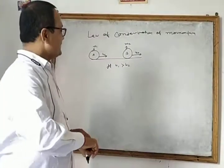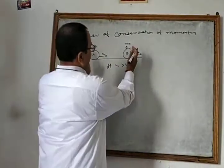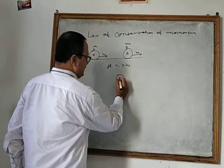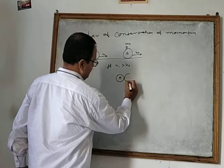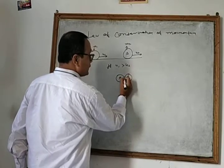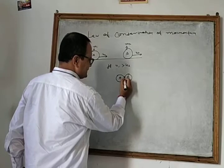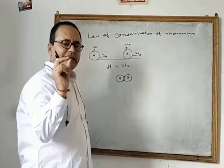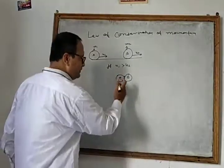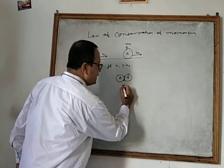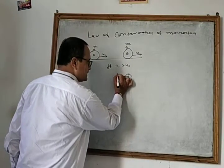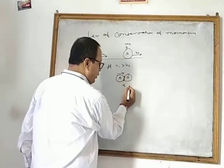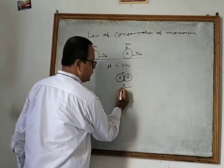So what happens? A and B collide. They collide for an instant, a small time T. During this time, A exerts force on B, and B also exerts force on A.